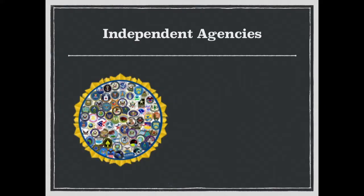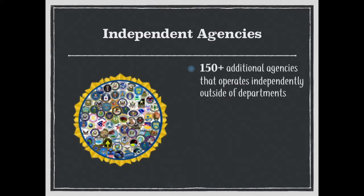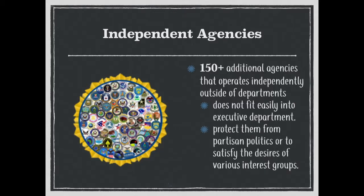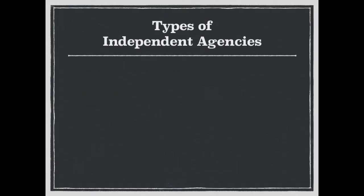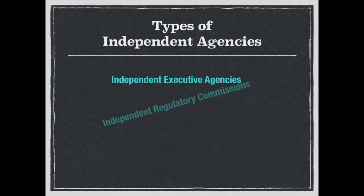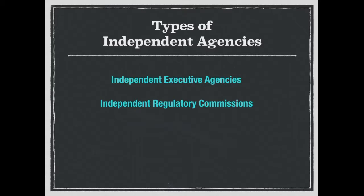There are a few major reasons why independent agencies stand out. First, they've been set up outside the regular departmental structure because they do not fit well within any of the departments. Additionally, some agencies were created to protect them from the influence of both partisan and pressure politics. It's important to note that the label 'independent agency' is really a catch-all. There are three types: independent executive agencies, independent regulatory commissions, and government corporations.